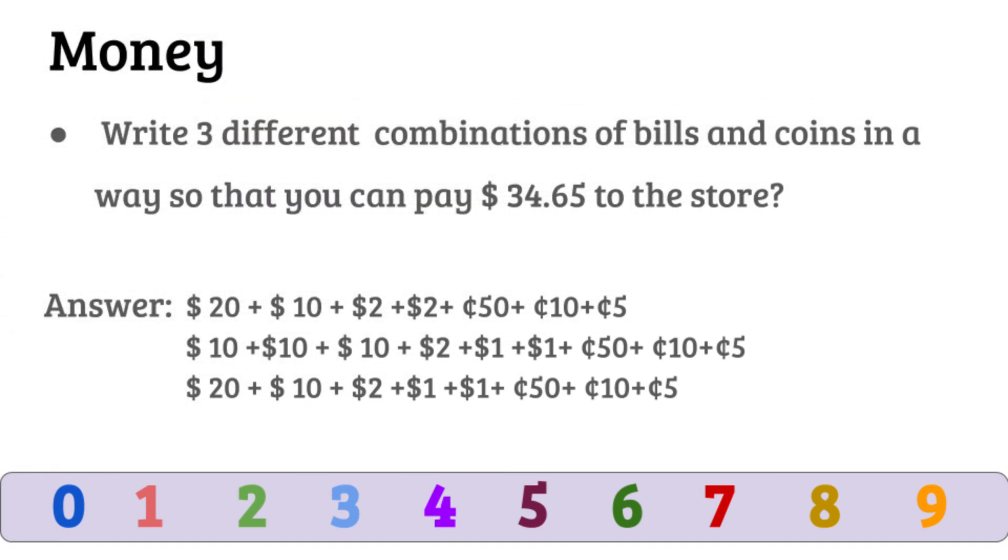Write three different combinations of bills and coins in a way so that you can pay $34.65 to the store. This type of question is really good for improving analytical thinking.